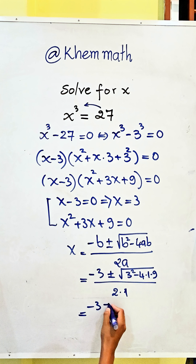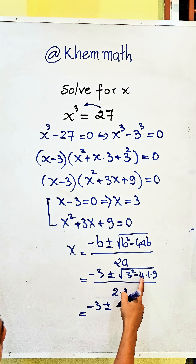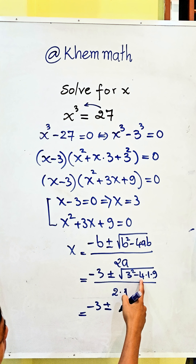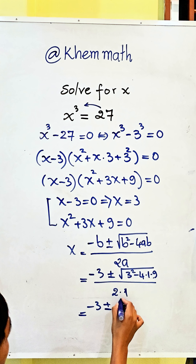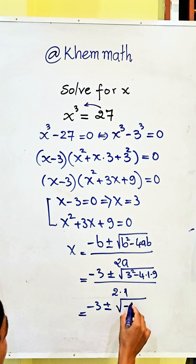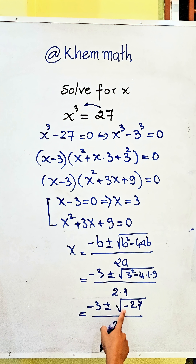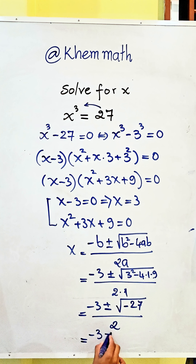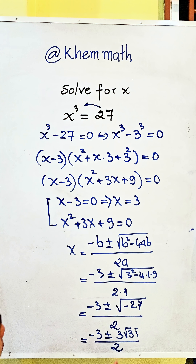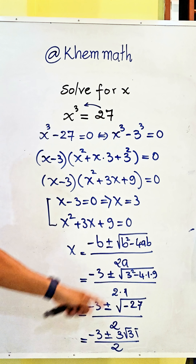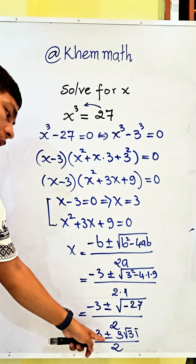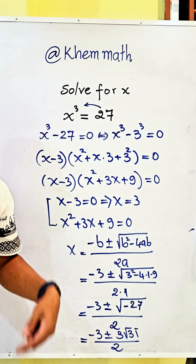And it is equal to negative 3 plus and minus. Here we get 9 minus 36, so it is equal to negative 27. So we get negative 27 divided by 2, and the square root of negative 27 is equal to 3 square root 3 times i. So we get negative 3 plus and minus 3 square root 3i, divided by 2. So our answer is x equals 3 and x equals negative 3 plus and minus 3 square root 3i, divided by 2.